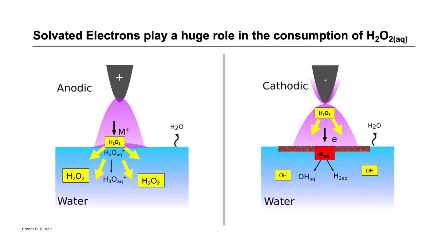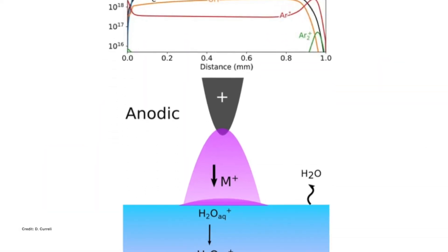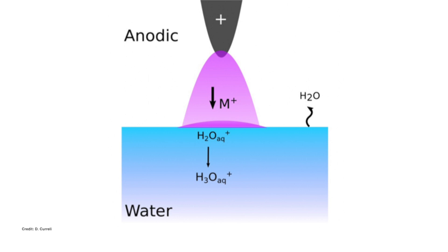One has to understand the role of the different components of the plasma — namely electrons and ions — and how they interact with the liquid, and what physical and chemical modifications they make to the liquid. Depending on the regime of operations of the plasma, you can trigger the delivery of specific chemical radicals to the liquid or avoid that. So it's a system that can be highly fine-tuned depending on the applications.